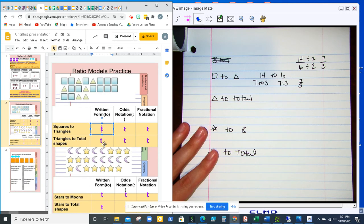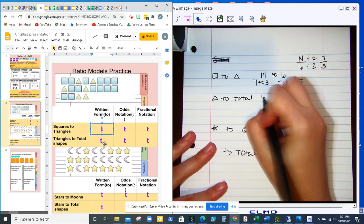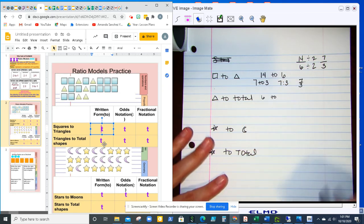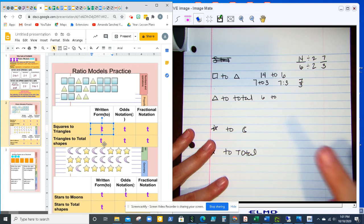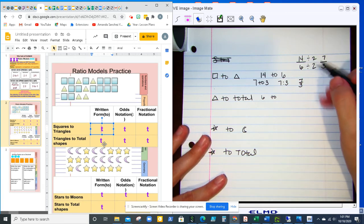The triangles to total shapes, well we know that the triangles are 6. So triangles are 6 to, and then the total would be, well 14 squares plus 6 triangles is 20.